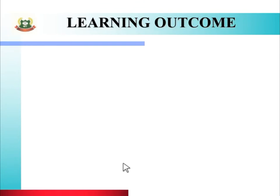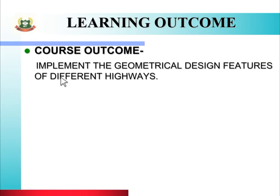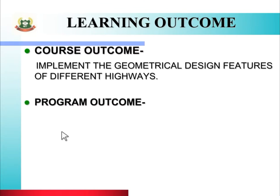Let us see the Course Outcome: Implement the Geometrical Design Features of Different Highways. यह unit पढ़ने के बाद आप highway design करते समय highway के different geometrical parts के rules apply कर सकते हो। Next is Program Outcome — the related program outcomes are PO1, PO6 and PO7, such as basic and discipline specific knowledge, project management, and lifelong learning.